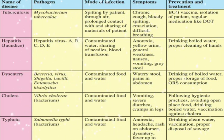The diseases listed in the chart are: first, tuberculosis; second, hepatitis; third, dysentery; fourth, cholera; and fifth, typhoid. Students, go through this chart carefully. You have to draw this chart in your notebook.